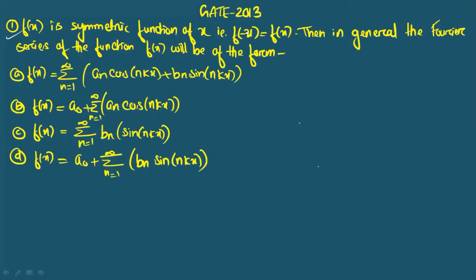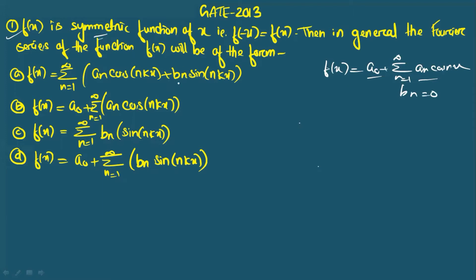The first question: fx is a symmetric function, meaning f(-x) = fx — so it's an even function. The Fourier series of an even function fx is written as: fx = a₀ + Σ aₙ cos(nx). That means you will have only the DC term and cosine terms; the sine term is not there — bₙ equals zero for an even function. Looking at the four options, the correct option is option B.